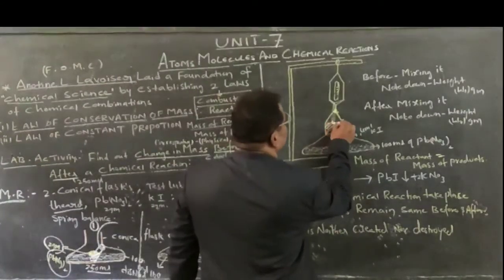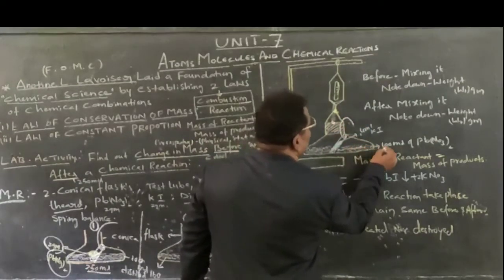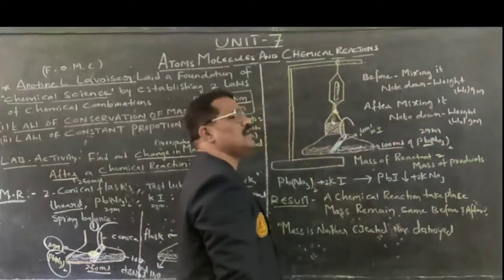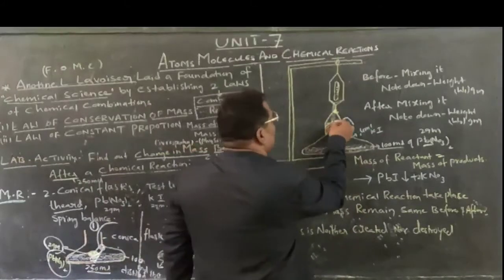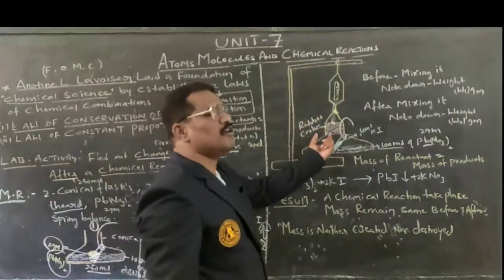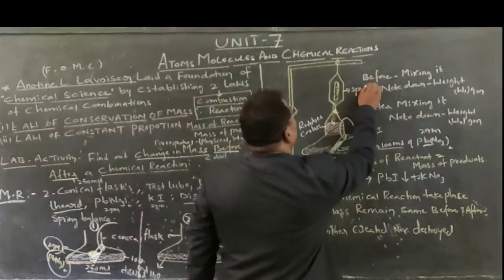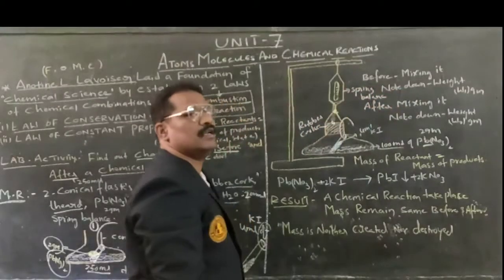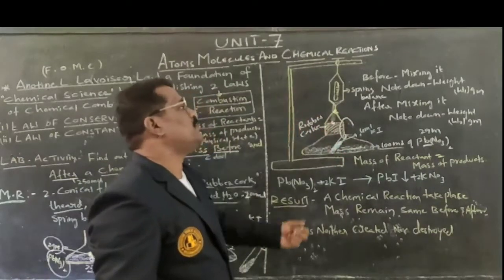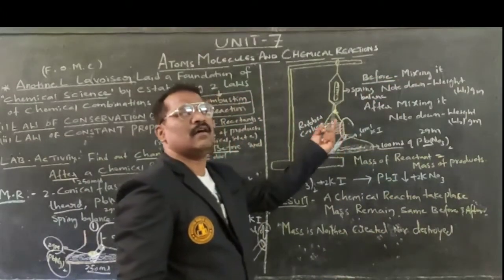And fix it with a rubber cork, such that the test tube should not be disturbed, and the solution in which 2 grams of lead nitrate is mixed with 100 ml of water remains sealed. Fix it firmly with the rubber cork. Tie it with a thread, and hang this conical flask on a spring balance. Note the weight before, without allowing the two liquids to mix up. Observe and record the weight of this particular conical flask consisting of two different solutions as W1 grams.